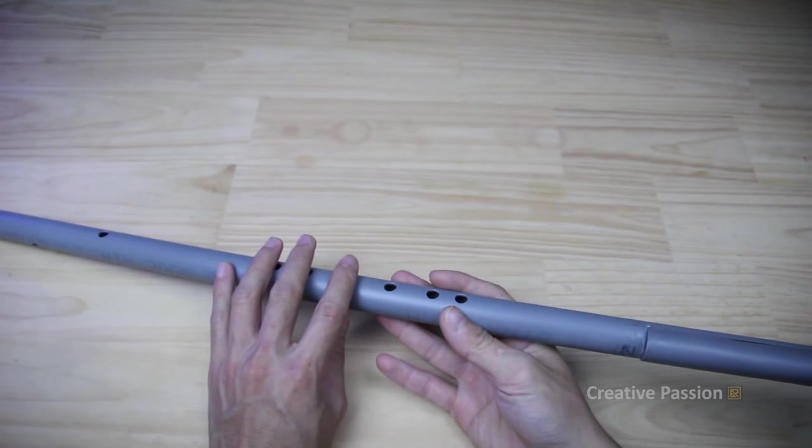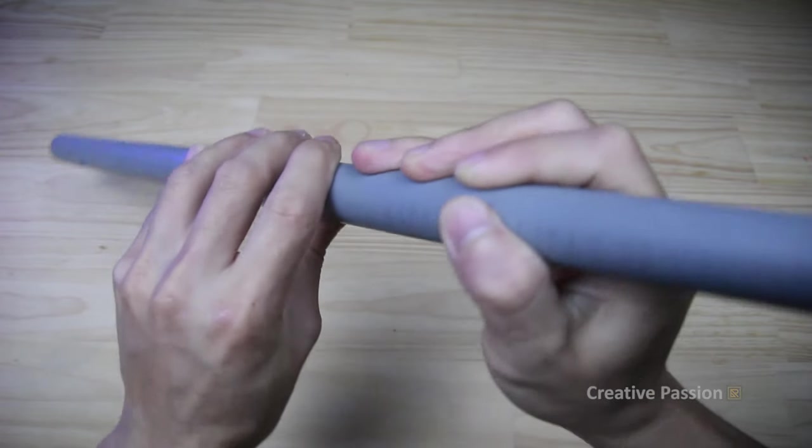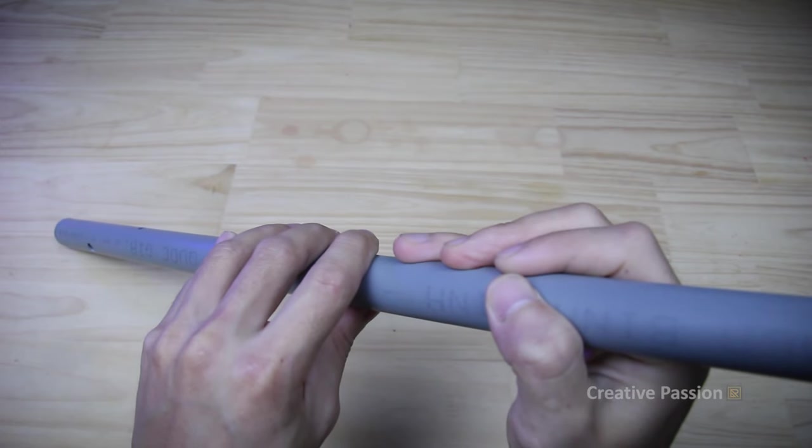When we close all the holes, it will produce the lowest note of the flute, which is the low So note. We must blow gently. If you blow hard, it will sound like this. There, we must blow gently for it to come out.